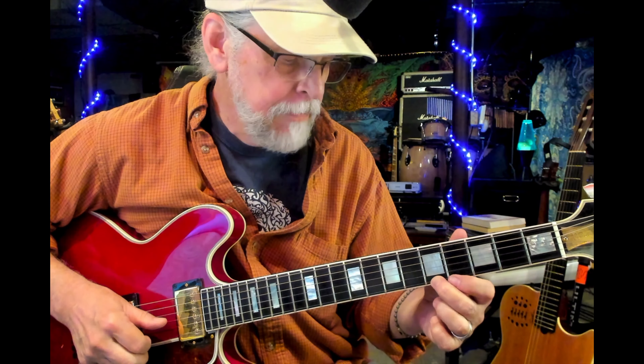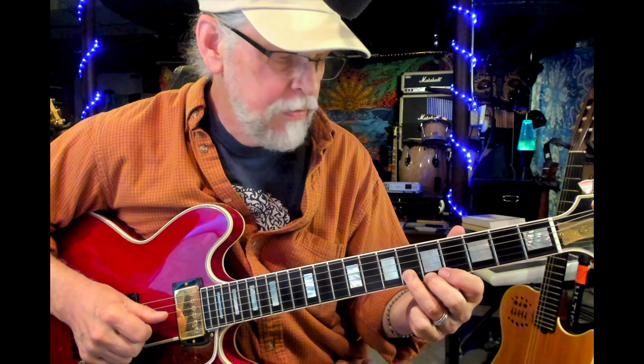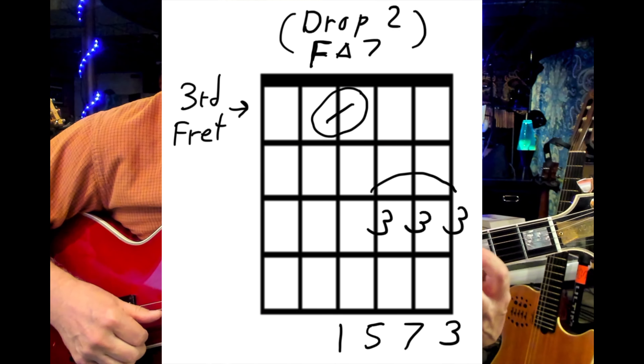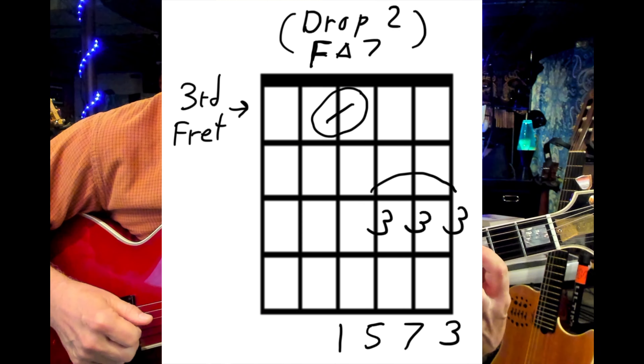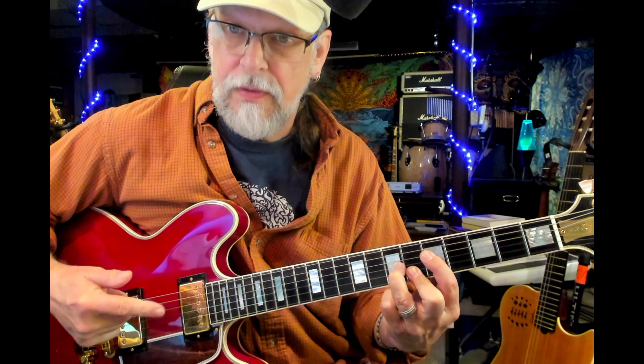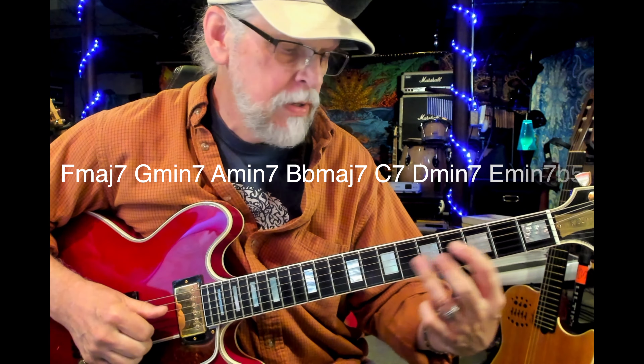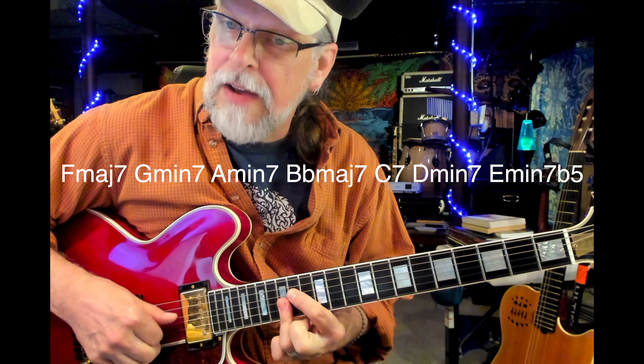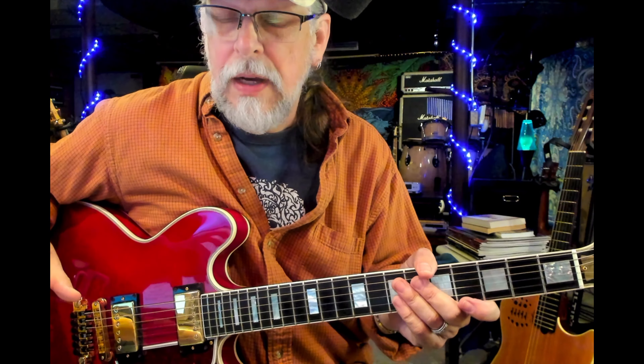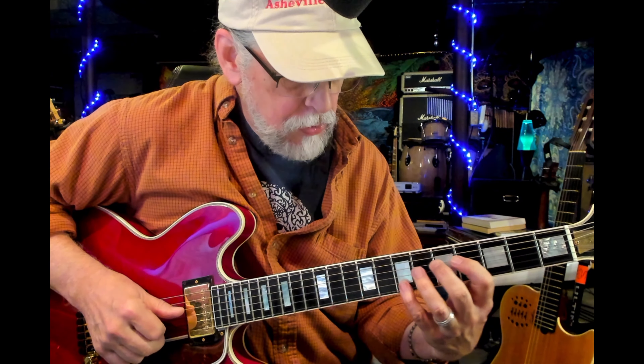We can do another set of drop twos for the four, three, two, one string group. We take that arpeggio backwards from the top note — which is an A — take that second note from the top, this F, drop it down and put it in the root — that gives us an F major seven. That's a drop two chord. Here's the diatonic sequence in the key of F major: F major seven, G minor seven, A minor seven, B flat major seven, C dominant seven, D minor seven, E minor seven flat five, back to F major seven.